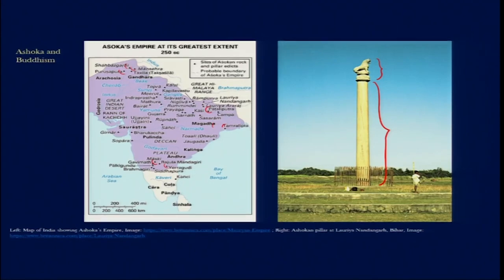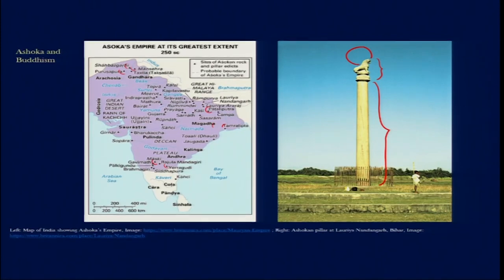We are looking at a pillar from Lorya Nandangar in Bihar, dating from the 3rd century BC. The animal carved on top of this pillar is rendered in a highly naturalistic way, and it is believed that on the very top there was a wheel — the wheel of law — which is very important in Buddhism. This is the dhamma chakra, the wheel of law, and it is believed that Buddha turned the wheel of law when he preached for the first time at Sarnath, close to Varanasi.